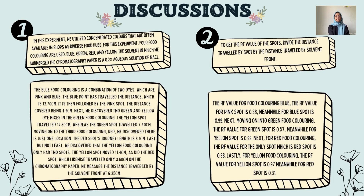The solvent front was measured at 6.35 cm. To calculate the Rf value, divide the distance traveled by the spot by the distance traveled by the solvent front. For blue food coloring: the Rf value for the pink spot is 0.38 and for the blue spot is 0.99. For green food coloring: the Rf value for the green spot is 0.57 and for the yellow spot is 0.99. For red food coloring: the Rf value for the red spot is 0.98. For yellow food coloring: the Rf value for the yellow spot is 0.97 and for the red spot is 0.31.